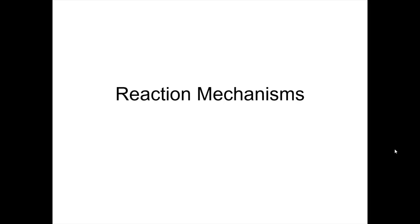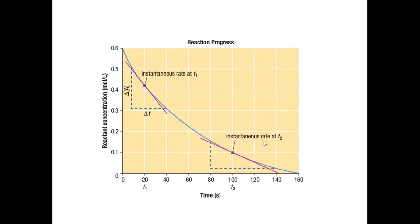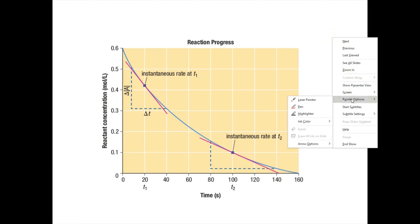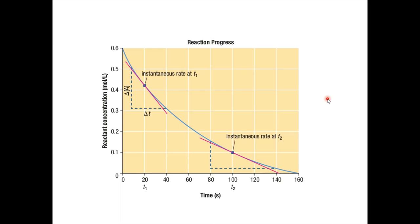Your book actually covers instantaneous rates in this fourth section, so we've basically already talked about it, and you'll get some homework questions on it. Now, for a chemical reaction you might get a graph called a 'reaction progress' graph. The x-axis is time — in seconds, blocked off in intervals of 20 seconds — and the y-axis is reactant concentration, for example chlorine or nitrogen dioxide concentration.